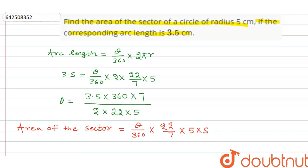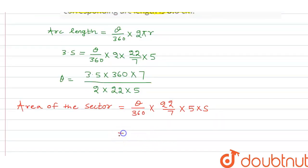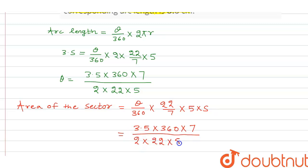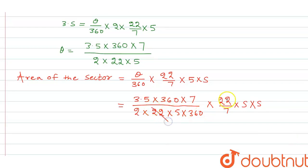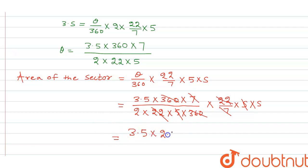Substituting the value of theta, we get: area = [3.5 × 360 × 7 / (2 × 22 × 5)] divided by 360, multiplied by (22/7) × 5 × 5. After cancellation, this simplifies to 3.5 × 2.5.